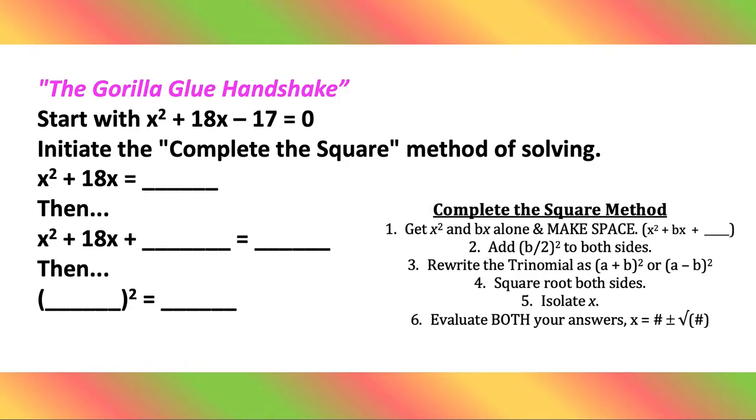Hello again students, let's do the Gorilla Glue Handshake. That sounds intimidating. Start with x squared plus 18x minus 17 equals zero. Initiate the complete the square method of solving.